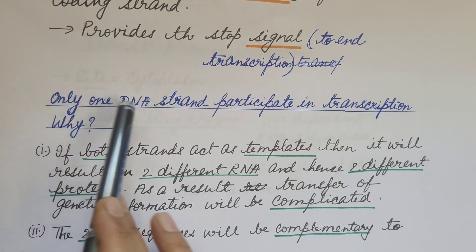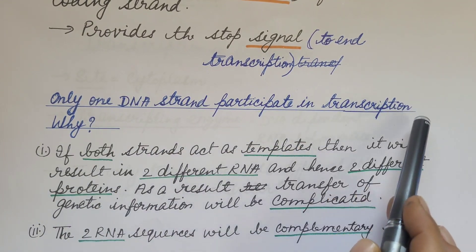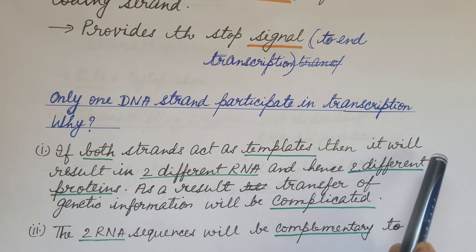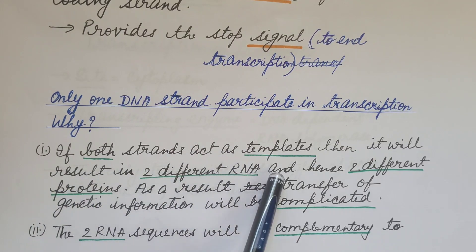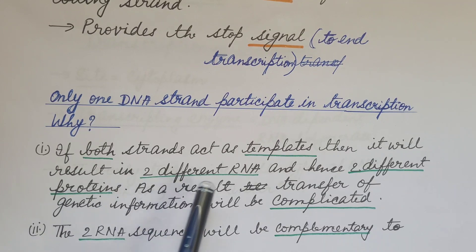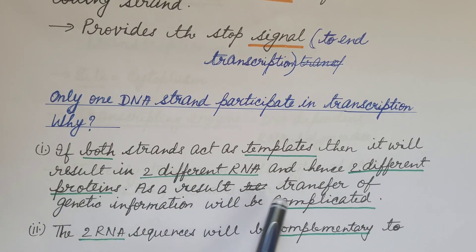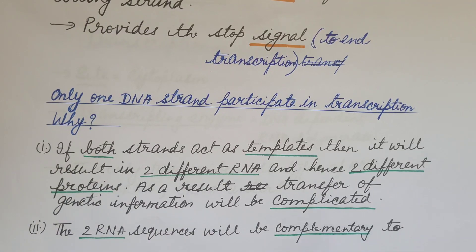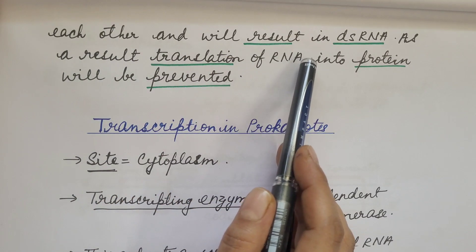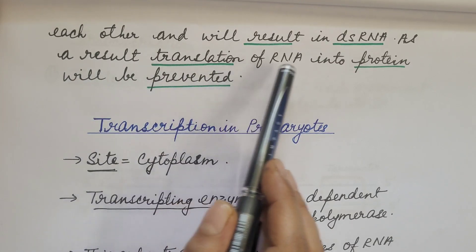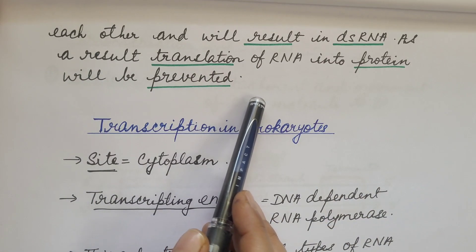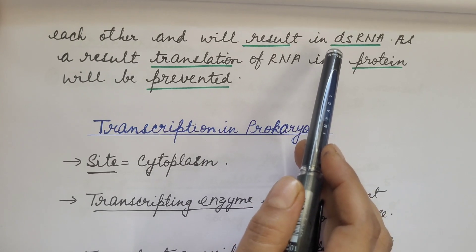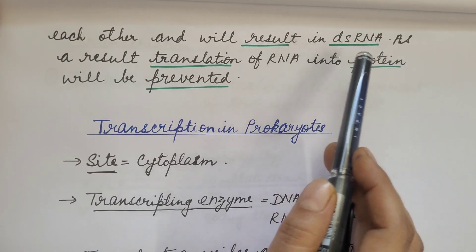Only one DNA strand participates in transcription. But why? If both strands act as templates, it will result in two different RNAs and hence two different proteins, making transfer of genetic information complicated. Second, the two RNA sequences will be complementary to each other and will result in double-stranded RNA. As a result, translation of RNA into protein will be prevented, because protein synthesis takes place on single-stranded RNA and cannot take place on double-stranded RNA.